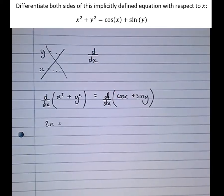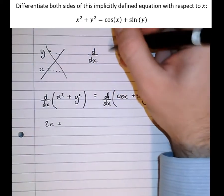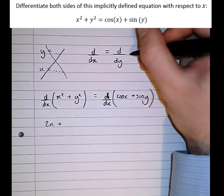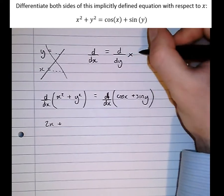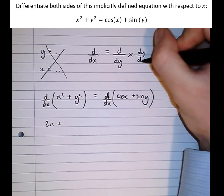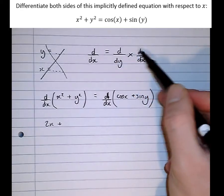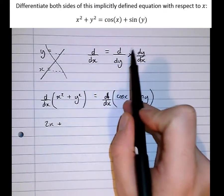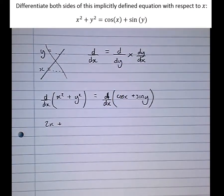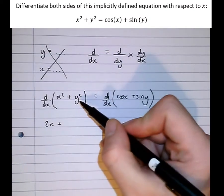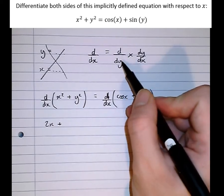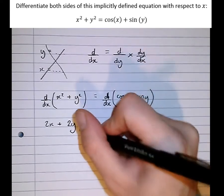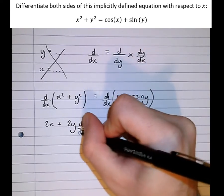Well notice that the d/dx operator, that means differentiate with respect to x. We could get an equivalent operator by doing d/dy, then multiplying by dy/dx. Notice that the dy's cancel to give just d/dx. So this here, d/dx is equivalent to d/dy, then multiplying by dy/dx. So if we do that, if we apply d/dy, if we differentiate with respect to y, we get 2y, then times by dy/dx.